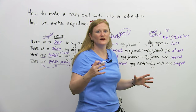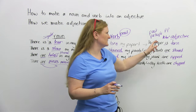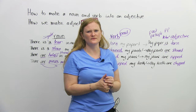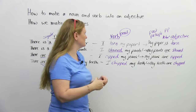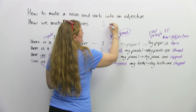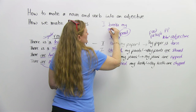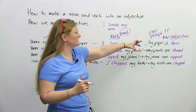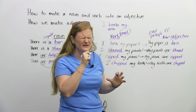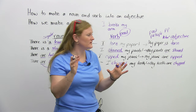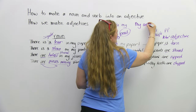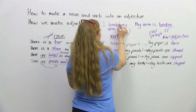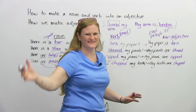This is how we make a lot of adjectives in English: you take a verb, you change it to the past participle. It's difficult to remember all of the past participles, but there are ones we normally use more than others, especially when describing things. Another example: 'I broke my arm' — 'broke' is the past tense of 'break.' Do you know the past participle of break? Break, broke, broken. So you're going to say: 'My arm is broken.' And all we've done is changed the verb into an adjective.